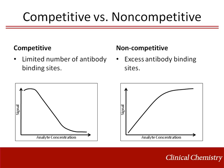Non-competitive immunoassays are designed to have excess antibody binding sites and produce a signal directly proportional to the amount of analyte in the sample. In sandwich immunoassays, two separate antibodies are used. A capture antibody is bound to a solid support and is used to extract the analyte of interest from the sample. A second antibody is labeled to allow detection and binds to a separate site on the analyte, resulting in an antibody sandwich with the analyte positioned in the middle. As the amount of analyte in the sample increases, the detectable signal increases.